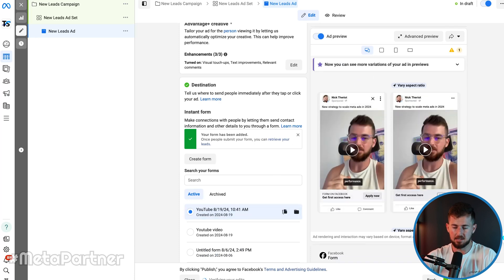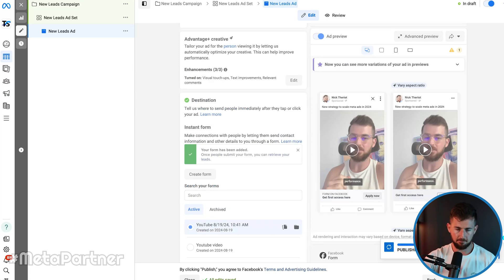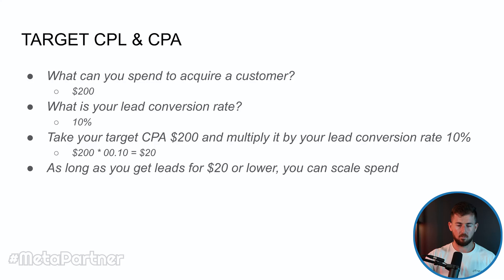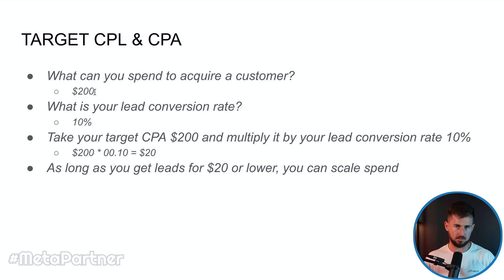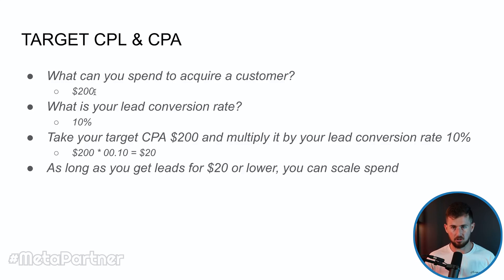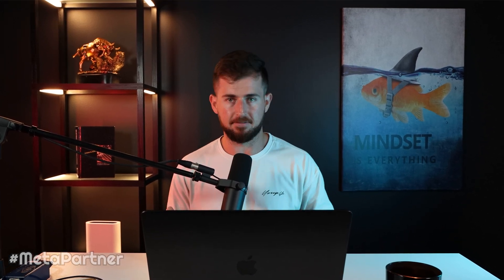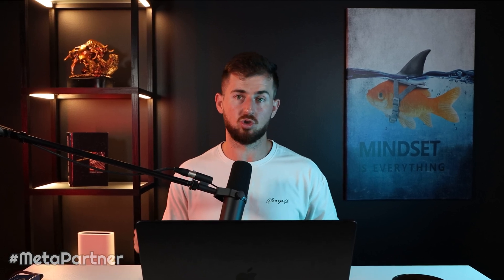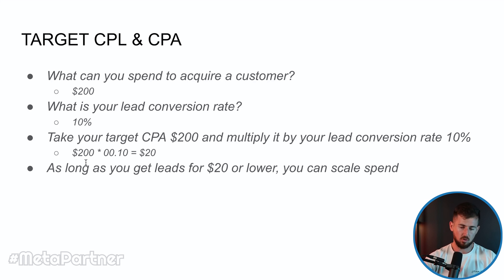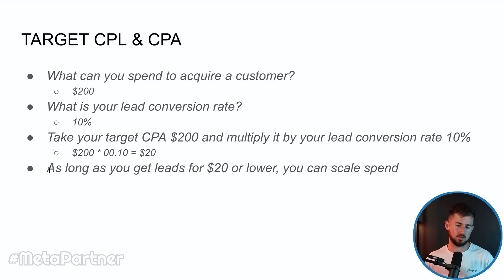Then I hit Create Form and we have our form created. We can publish our ad — that's how we set up our Instant Form. Now a couple of tips on campaign management. First is understanding your target CPL (cost per lead) and target CPA (cost per acquisition). What can you spend to acquire a customer? I put an example of $200. Then, what is your lead conversion rate? If I send you 100 leads and you convert 10 of them, that's 10%. $200 times 10% equals $20 — so as long as we get leads for $20 or lower, we can scale spend. That's how we figure out our target CPL and CPA.